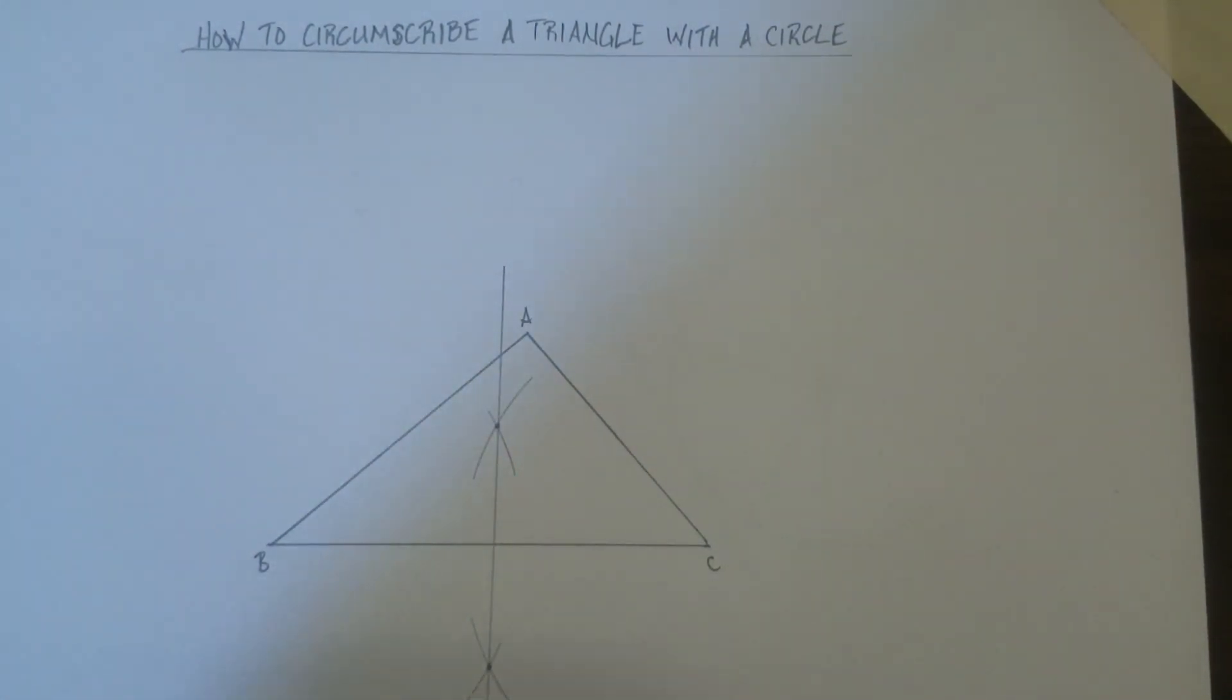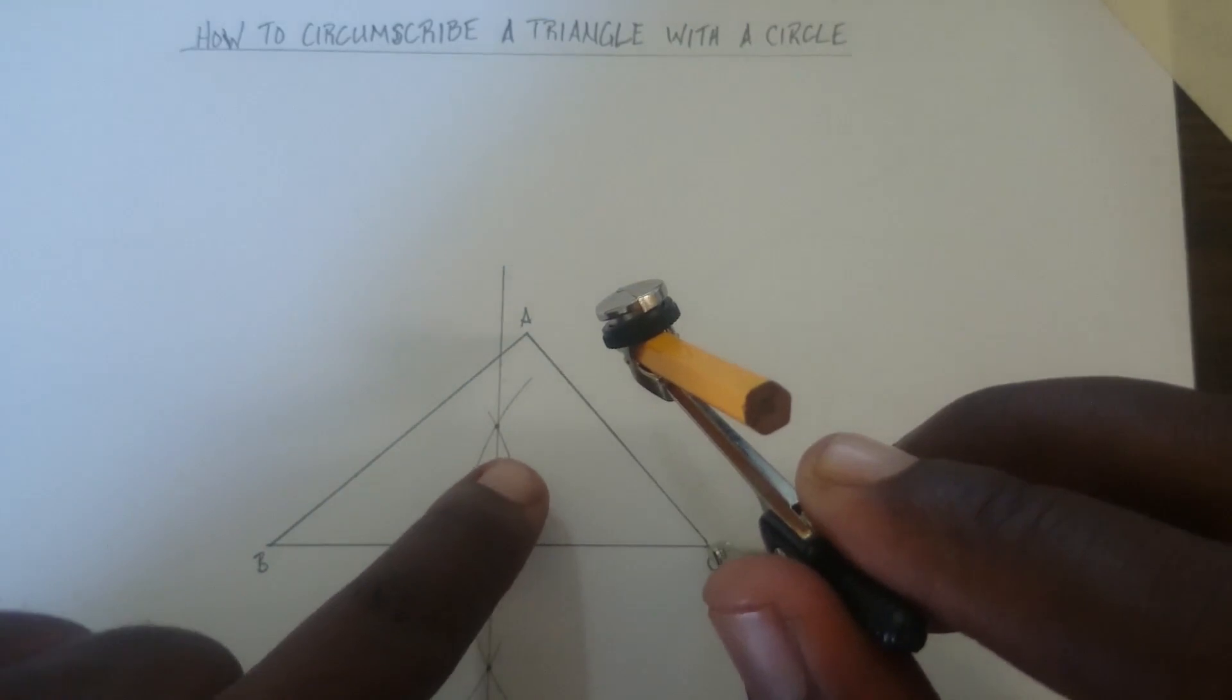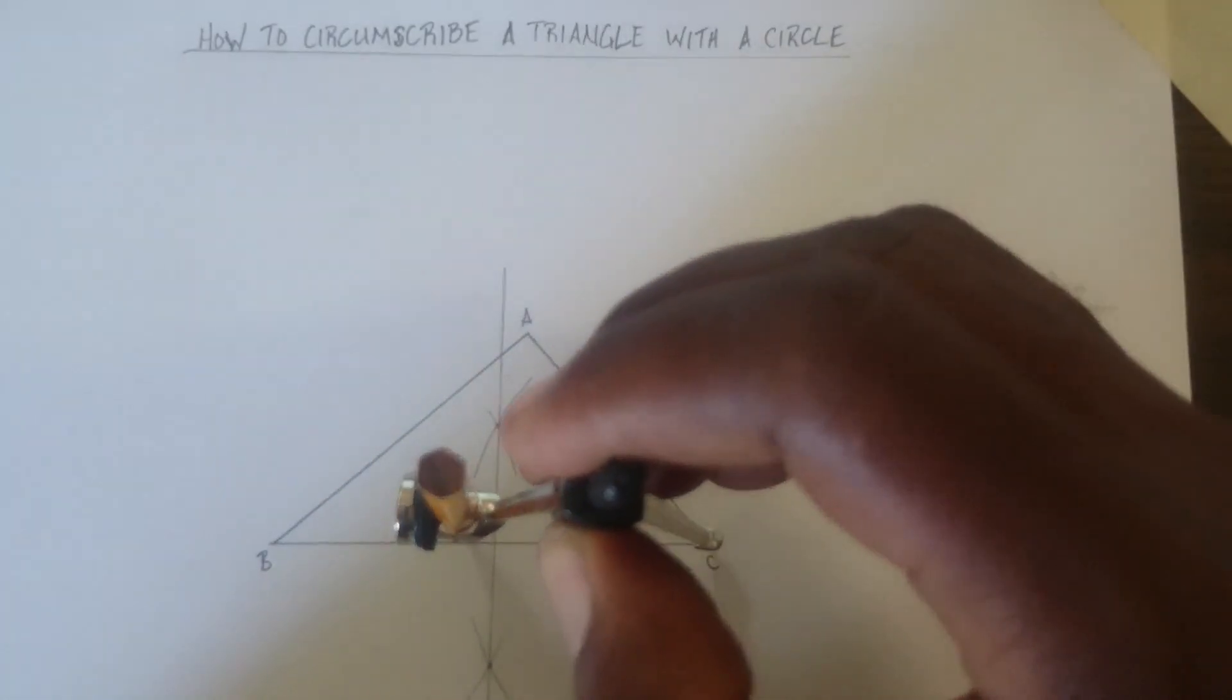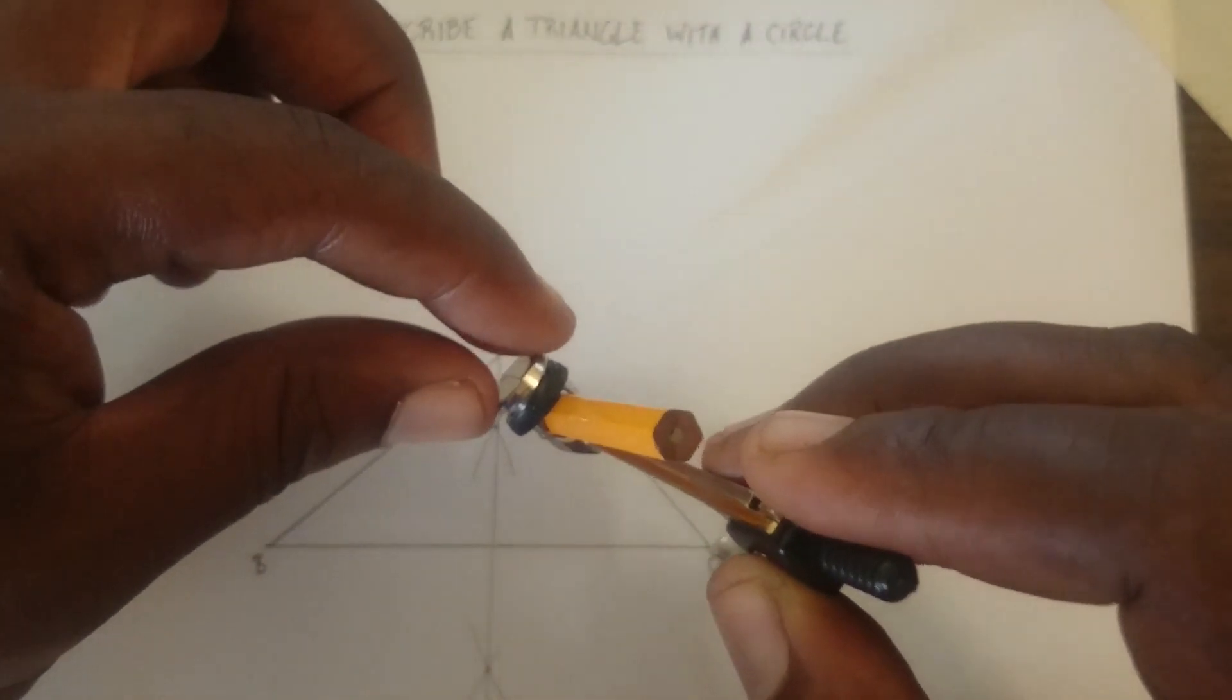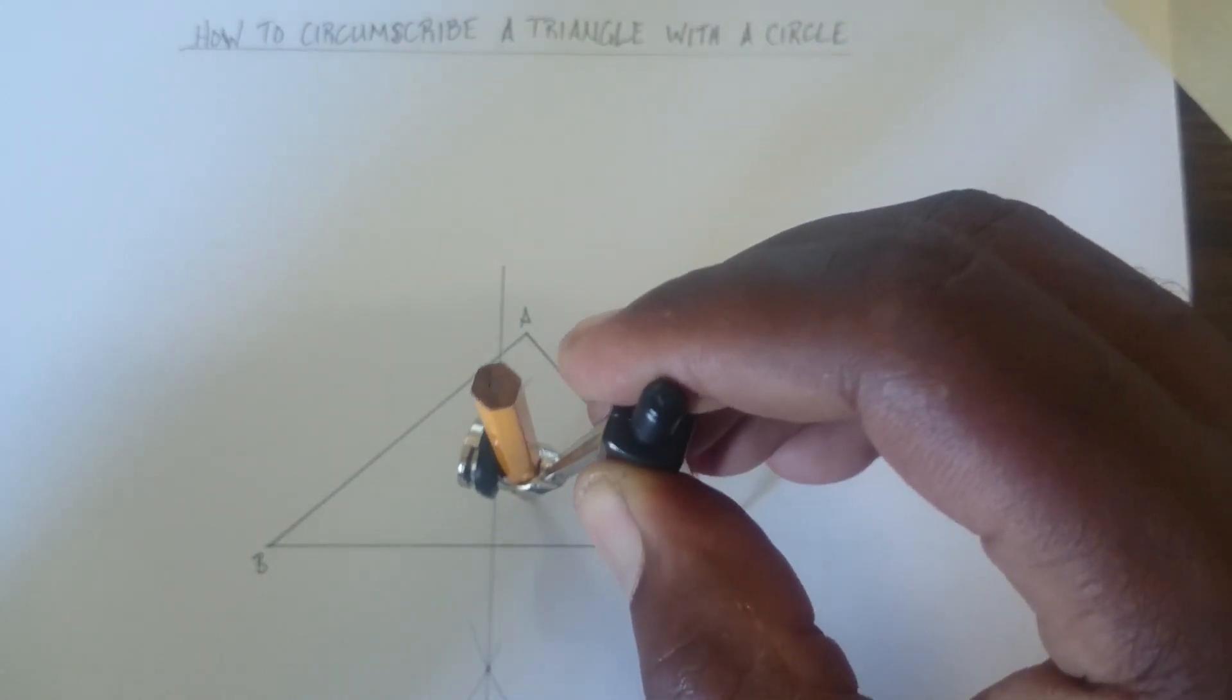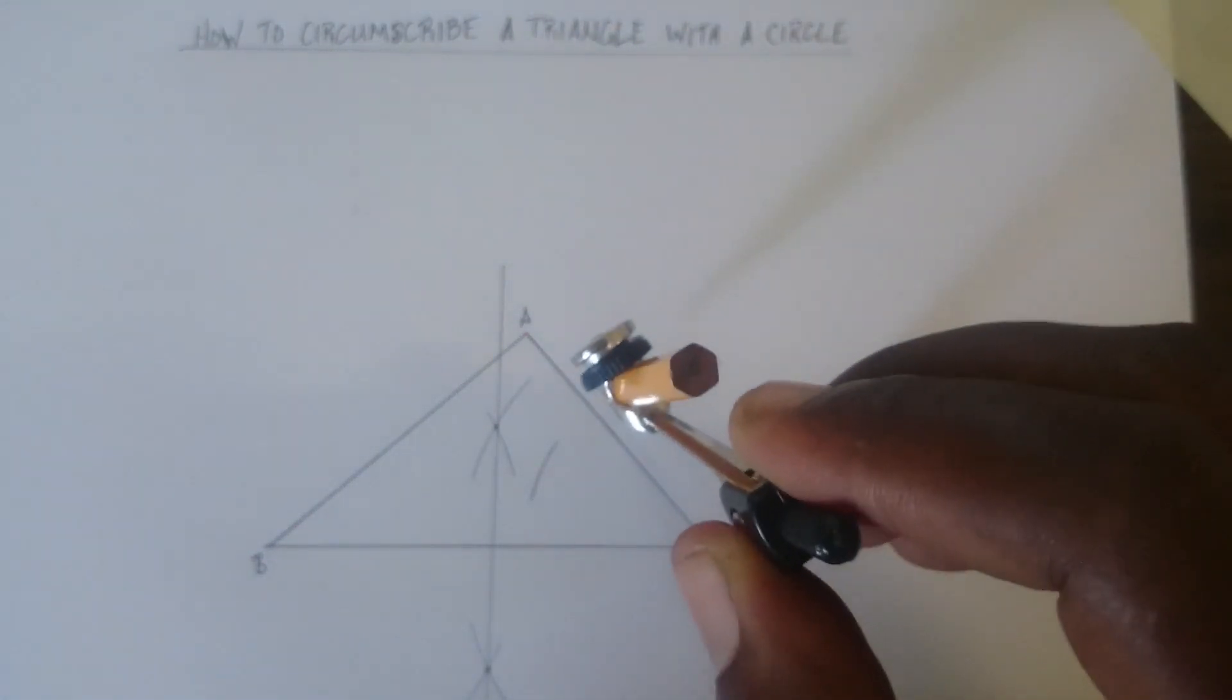The next thing we're going to do is the same thing for AC. Put your point at C, strike an arc on the left side and the right side. Make sure you don't get confused by the lines. You can change your compass size just so you don't get confused. Make sure it's more than half the distance of the line.